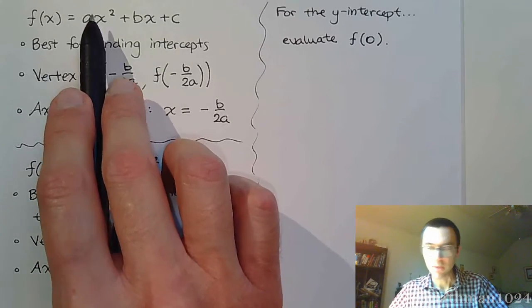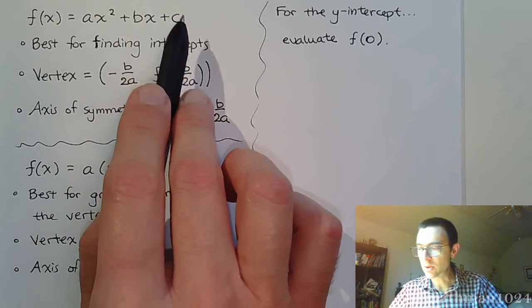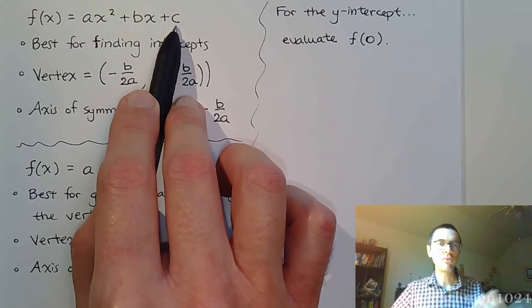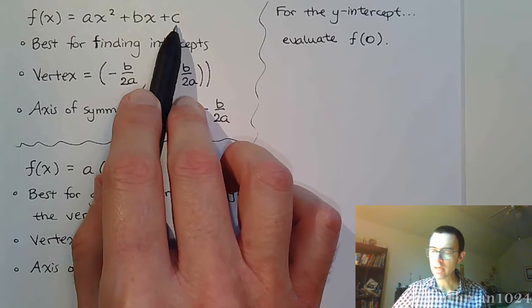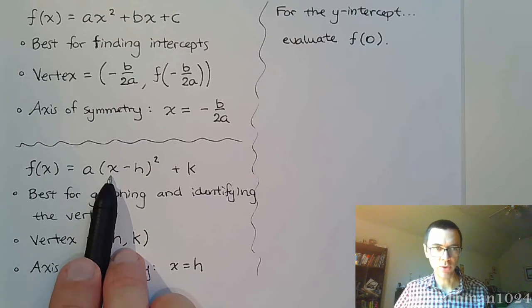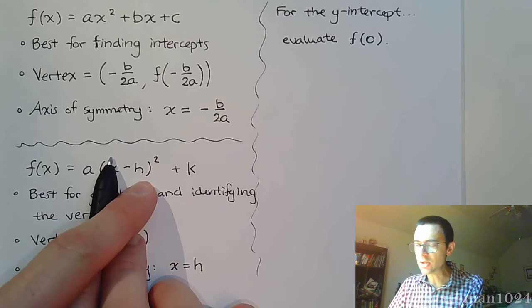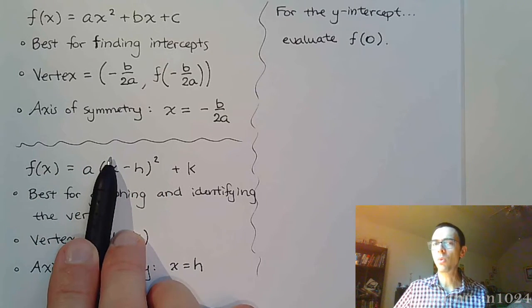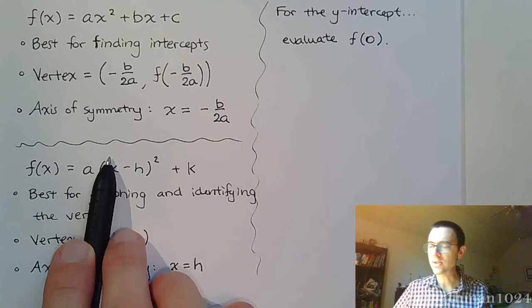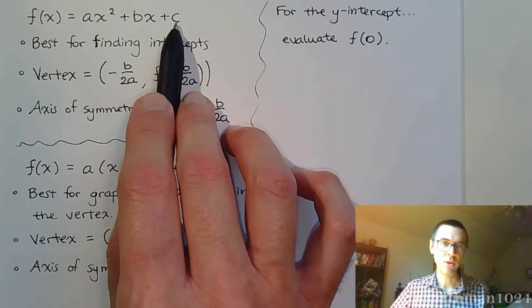If I plug in 0 here, that guy's gone, that guy's gone, and you're left with c. So very easily you've got your y-intercept. Down here, if I plug in 0, I've got to plug in 0, but then I still have to square the h times a plus k, so there's a bit more work to do there. It's not as nice and simple as just saying, there it is.